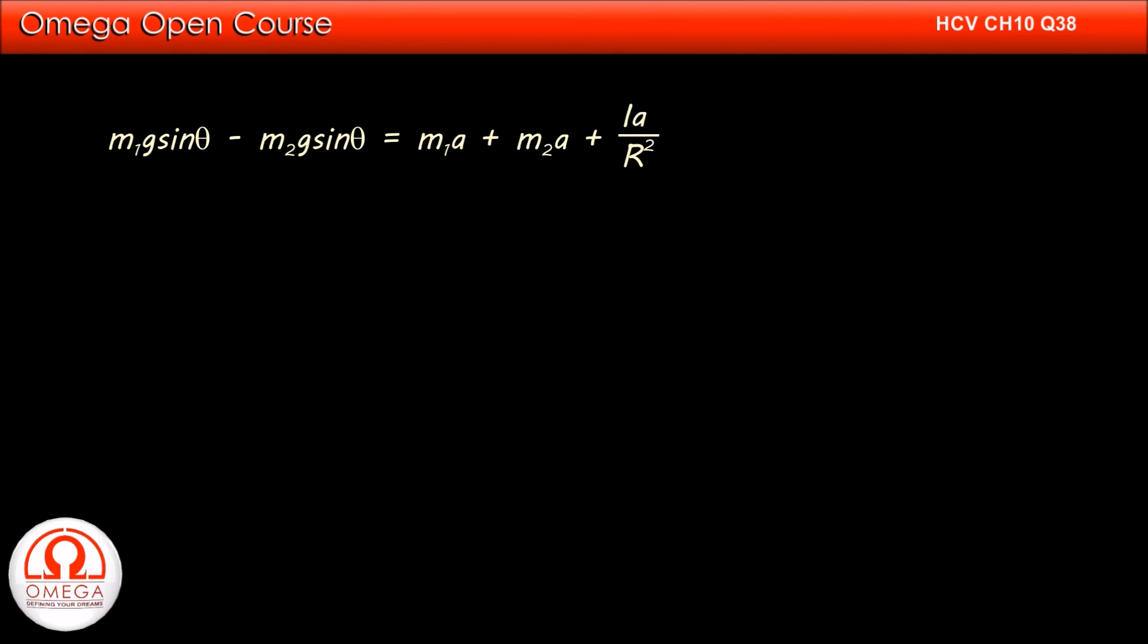Adding all these equations and simplifying, we get M1g sin theta minus M2g sin theta is equal to M1a plus M2a plus Ia by R square.